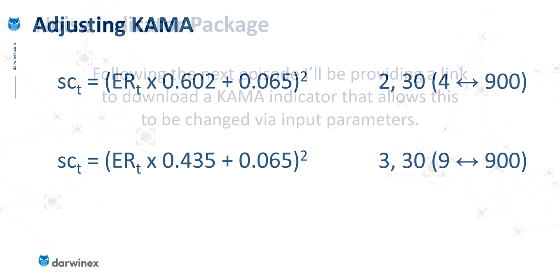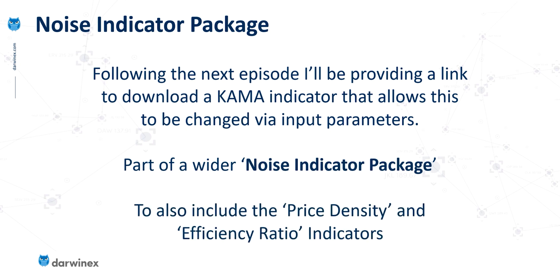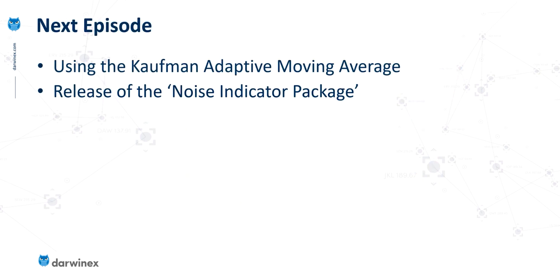Before you download any indicators, be aware that after the next episode — which will be the end of this noise series — I'll be putting together a noise indicator package, completely free to download. This will include my version of the KAMA indicator, which allows you to choose the parameters for the fast end, so you can try 2 or 3 and backtest them. Also included will be price density, which we've covered in previous episodes, and the efficiency ratio itself. Next episode, I'll be showing you how Kaufman recommends you use this indicator in a trading context, and I'll provide details to download that noise indicator package.